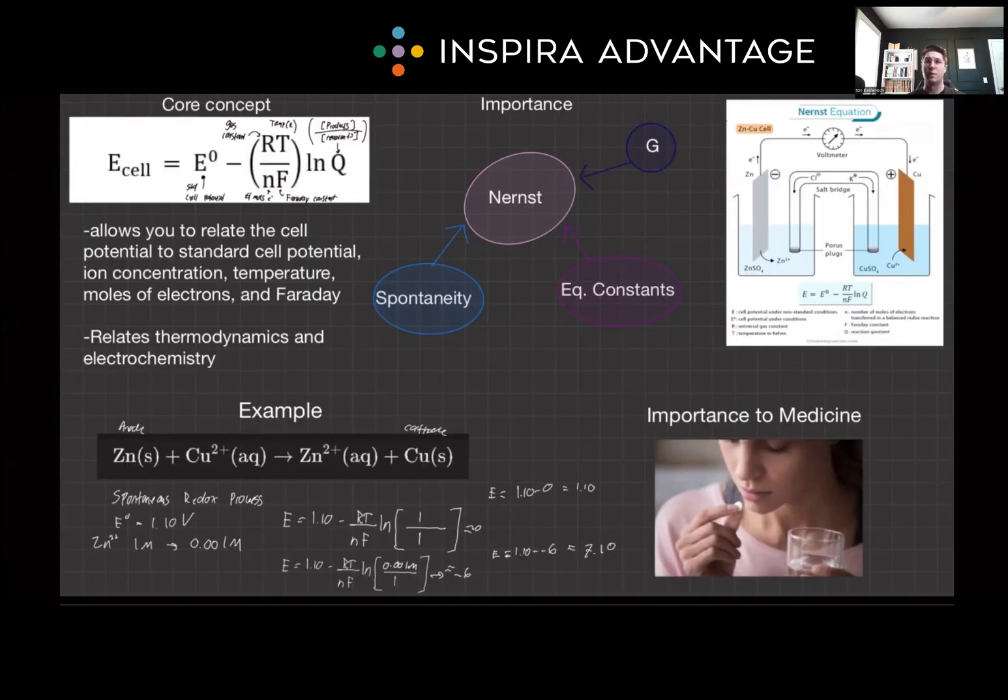The Nernst equation is a cornerstone of electrochemistry, offering deep insights into how cell potentials are influenced by various factors. Grasping this concept will illuminate many aspects of chemistry and biology relevant to the MCAT and future medical studies. I recommend watching this video in concert with other videos we've made on Gibbs free energy and galvanic cells.